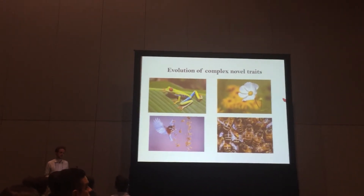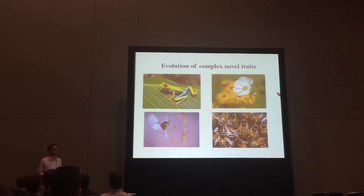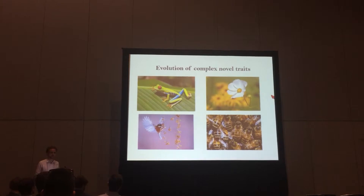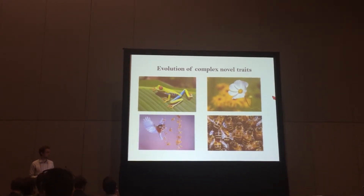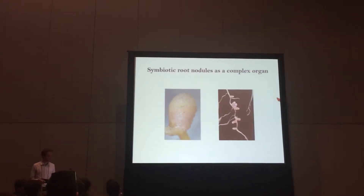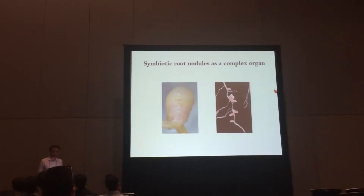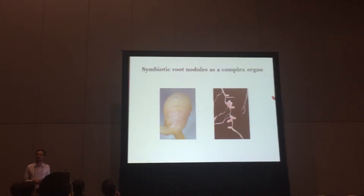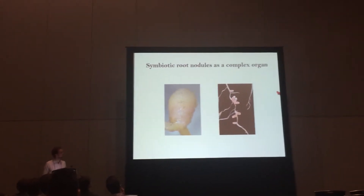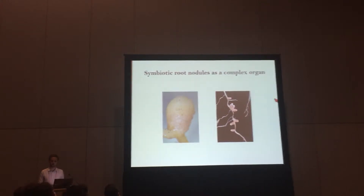The origins of a complex trait are difficult because for the complex trait to work, you need not a single simple adaptation but a whole range of subsequent steps and changes involving regulatory genes. To the left we see a symbiotic root nodule, and to the right we see a few of them on a plant's root system. They may not look complicated compared to an eye or a wing, but I would argue that this root nodule is a complex organ.